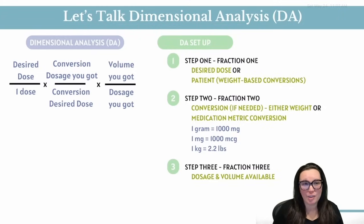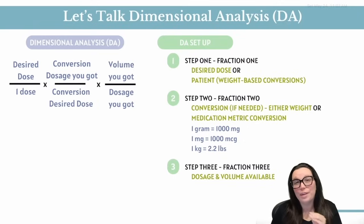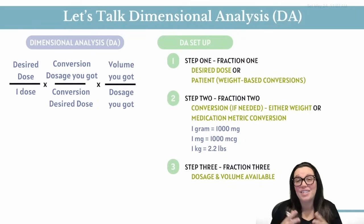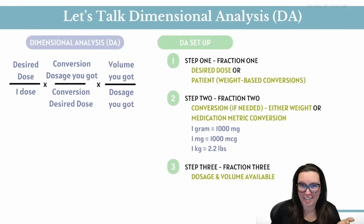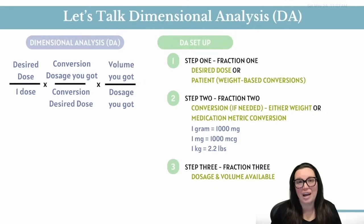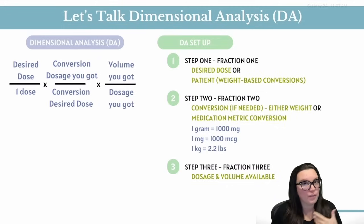Step three and fraction three, we are going to look at what we've got — dosage and volume. This is your final layer; it's what you have in your hand, the drug label information. Your dosage is how much drug you have in the container, and your volume or vehicle is what it comes in — it could be one tablet, 50 ml, whatever it looks like.